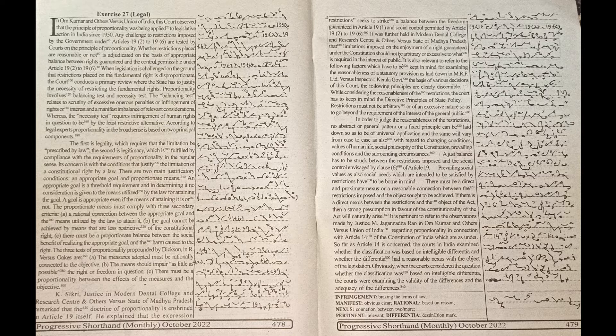The three tests of proportionality propounded by Dickson in R vs. Oakes are: A. The measures adopted must be rationally connected to the objective. B. The means should impair as little as possible the right or freedom in question. C. There must be a proportionality between the effects of the measures and the objective.